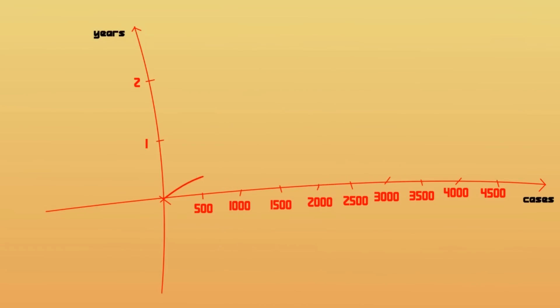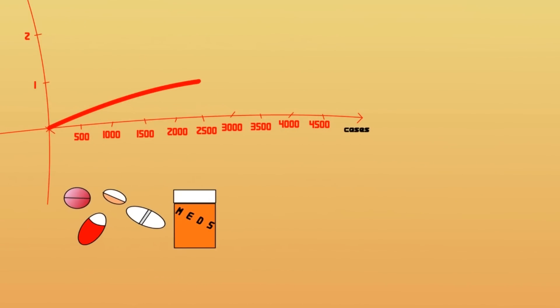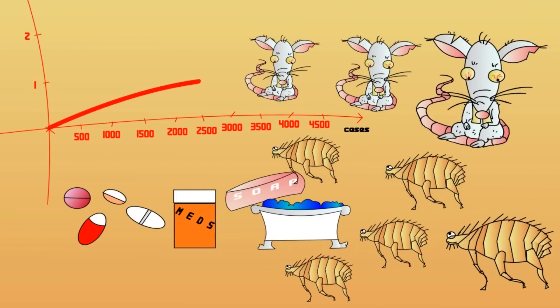A few thousand cases are reported every year, though medical treatment is much more effective, and in general, our lives are cleaner than 700 years ago. Thankfully, we don't have to worry about rats and fleas in our everyday lives.